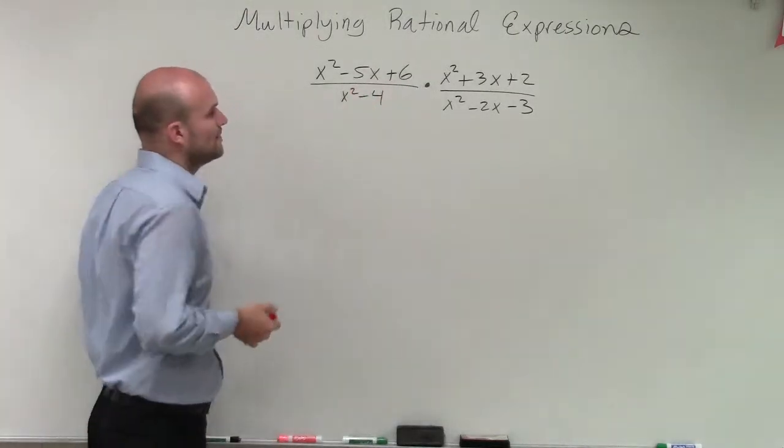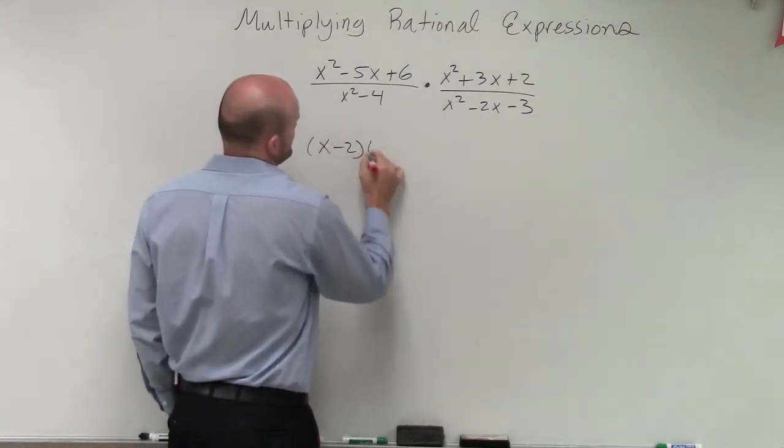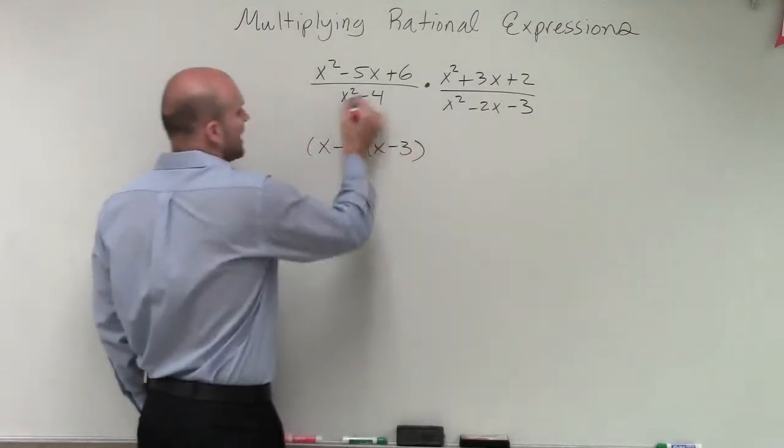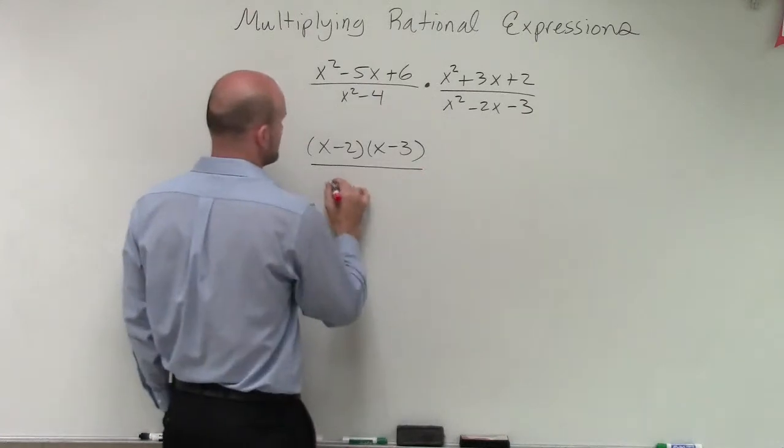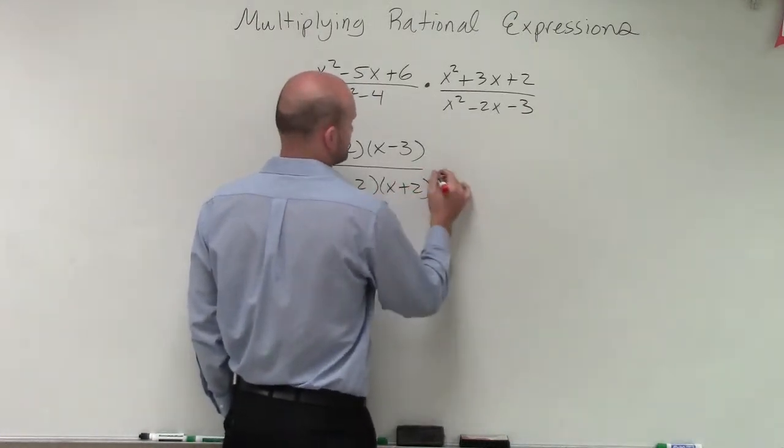I need to determine what two numbers multiply to give me a positive 6 and add to give me a negative 5. That's going to be x minus 2 times x minus 3. x squared minus 4, that's a difference of two squares, which is x minus 2 times x plus 2.